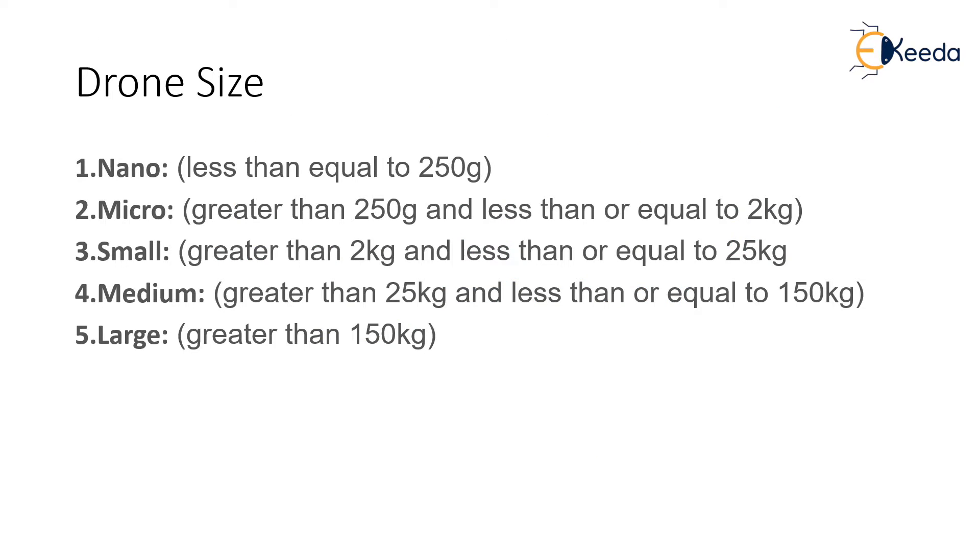There are various categories based on the size of the drone. The categories are: first is nano, which is less than or equal to 250 grams; next is micro, which is greater than 250 grams but less than 2 kg; next is small, which is greater than 2 kg but less than 25 kg; medium category, which is greater than 25 kg but less than 150 kg; and finally the large category, which is greater than 150 kg. These drone sizes have been defined as per the DGCA regulations.